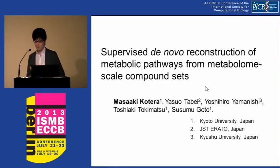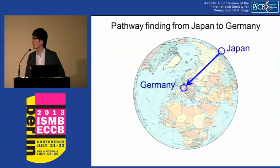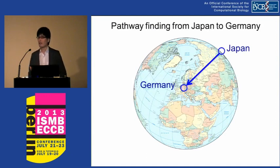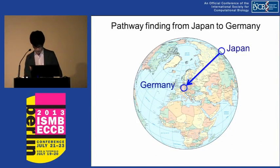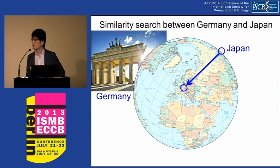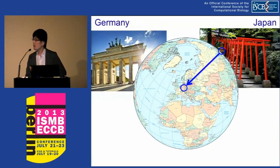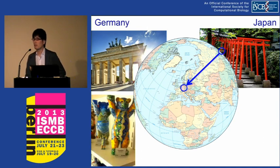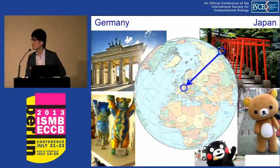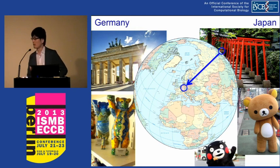Since I am from Japan, in order to come to Germany, I conducted a pathway finding from Japan to Germany, and I found it very far. I also conducted a similarity search between Germany and Japan. There is a very famous beautiful gate in Germany — we also have gates. And Berlin has a lot of famous bears — we also have a lot of bears. As a result of the analysis, we found that we are very similar to each other, and we are very glad to know that.